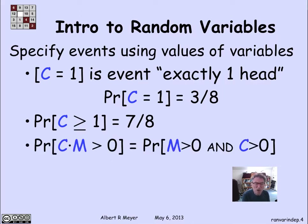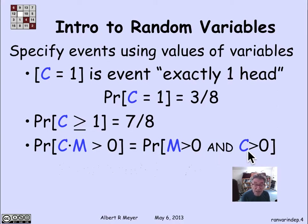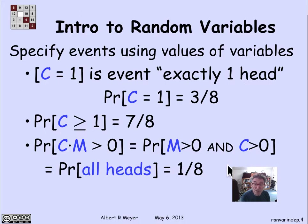Here's a more interesting one. I can use the two variables c and m to define an event: what's the probability that c times m is greater than 0? Since c and m are both non-negative, the probability that their product is greater than 0 equals the probability that each of them is greater than 0. C greater than 0 means at least one head, and m greater than 0 means all the coins match. This is an obscure way of describing the event 'all heads,' which has probability 1/8.